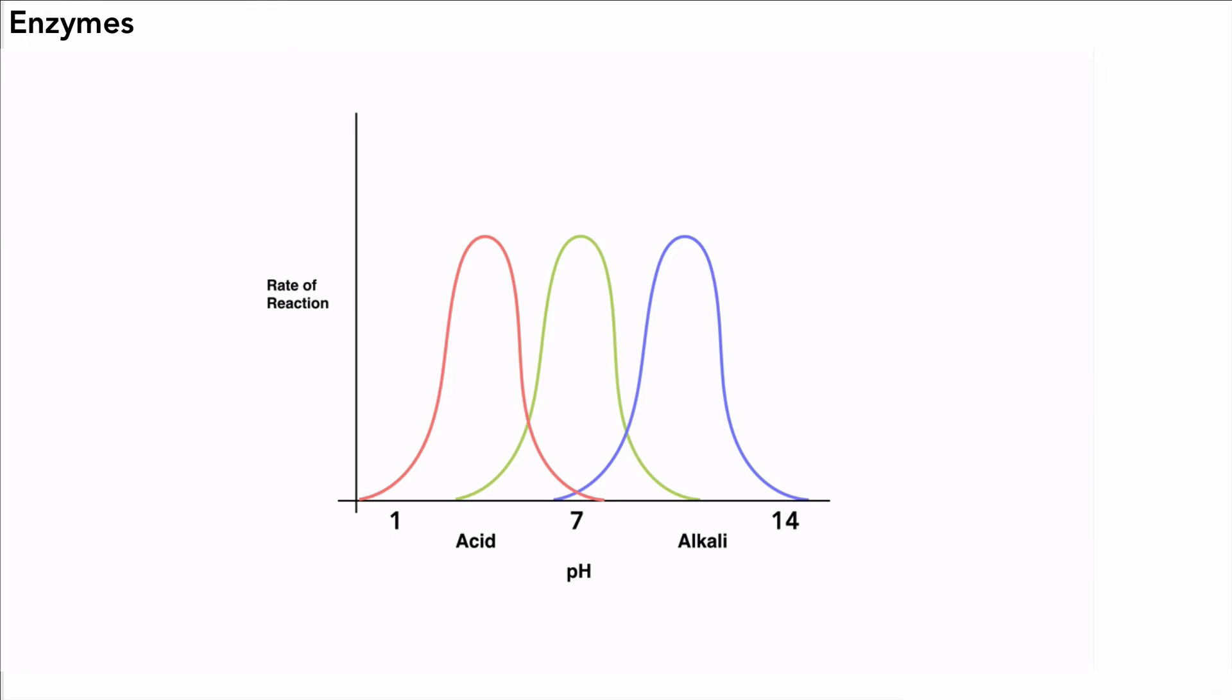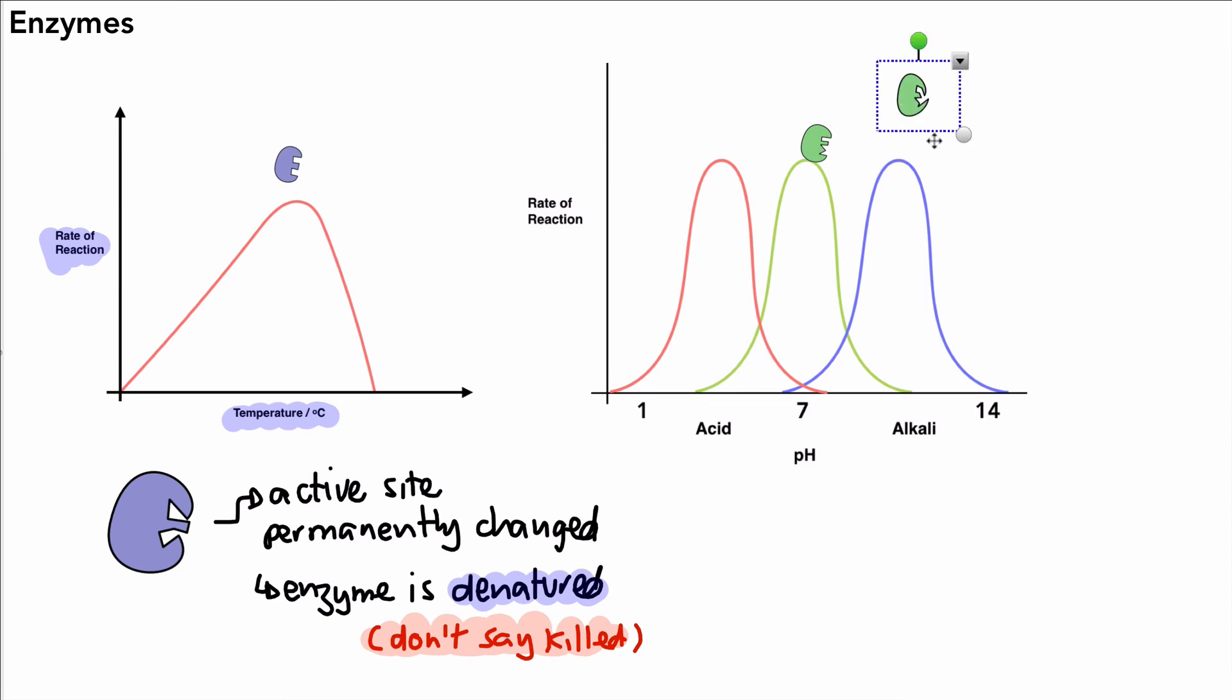And the effect of excessive pHs is very similar to that of when we have too high temperatures. So here's a diagram of our graph. Our enzyme happily works away at its optimum pH. But when we go beyond this optimum pH, its best pH, similar to before, the active site loses its shape and can no longer work. So again we say that the enzyme has become denatured because of excessive pH.